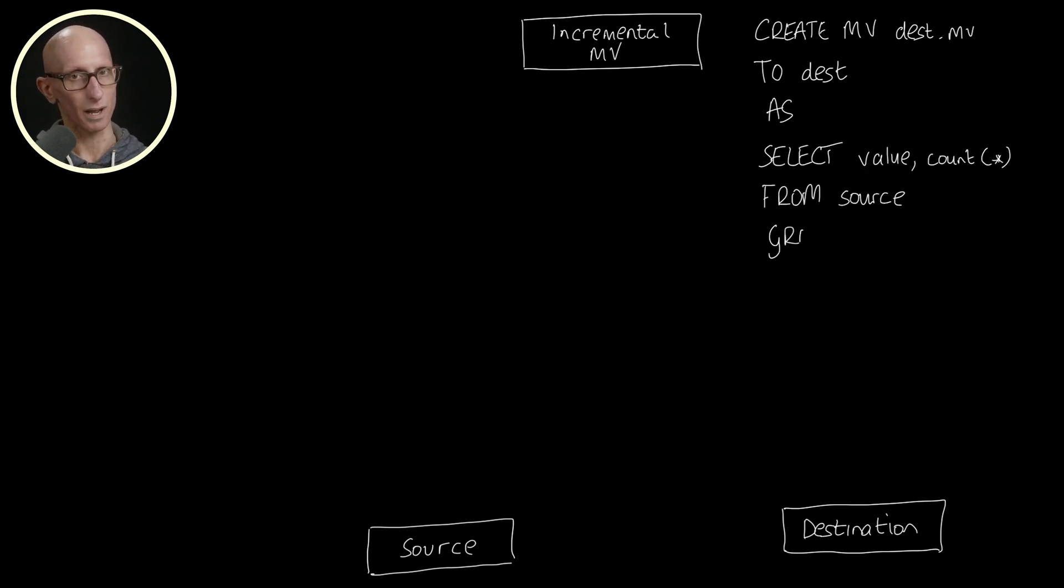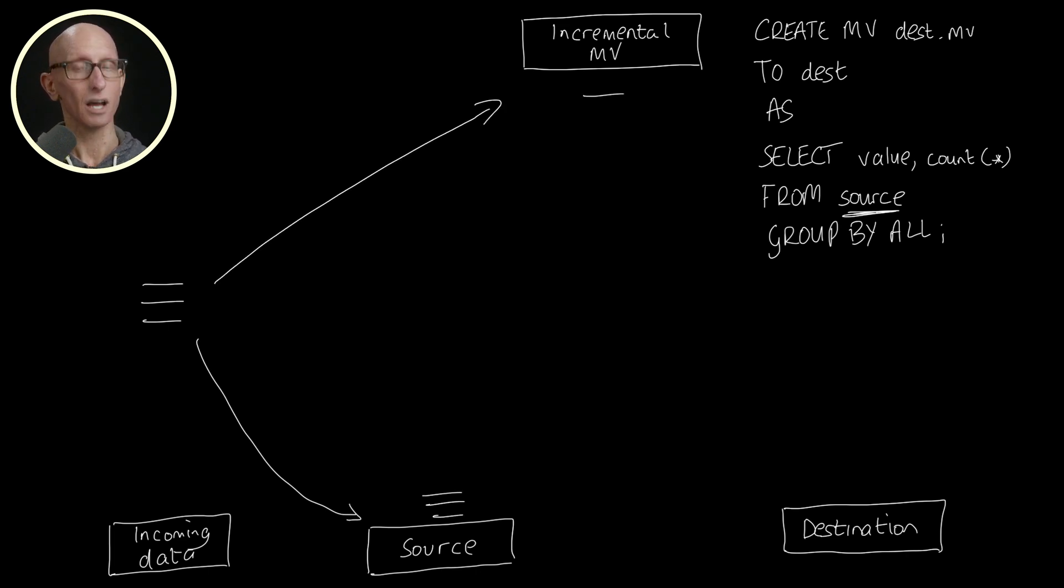Now something to remember with incremental materialized views is that source doesn't refer to all the data in the source table. Instead it refers to batches of incoming data being written to the source table. So as well as being written to the source table, the materialized view will be triggered by the arrival of a batch of rows.